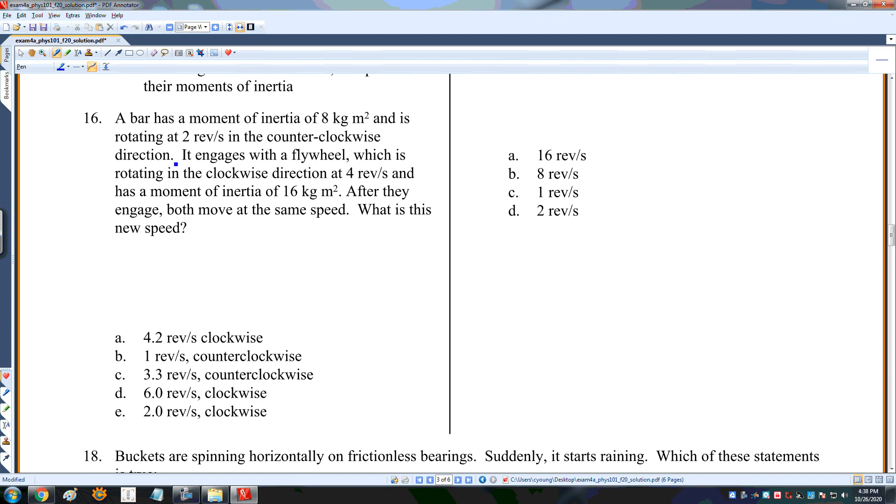The bar has a moment of inertia of 8, rotating at 2 revolutions per second counterclockwise, or the positive direction. It engages with a flywheel rotating clockwise at 4, with a moment of inertia of 16. Then they engage and both move at the same speed. This is conservation of momentum. I have 8 times 2, that's the momentum of the bar, plus 16 times negative 4, that's the momentum for the flywheel. Then they come together, that's 16 plus 8 times omega. So 16 minus 64 equals 24 omega. Omega is negative 48 over 24, or negative 2, or 2 revolutions per second clockwise.